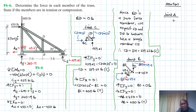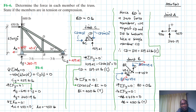Let's go to joint A. We have the reaction force Ay = 340.19 pounds and AB = 450 pounds in tension. The reaction force Ax = 450 pounds acts there as well. Let's assume member AE is in compression. Summation of forces in the Y direction equal to zero: 340.19 minus AE equals zero. Therefore, AE = 340.19 pounds in compression.